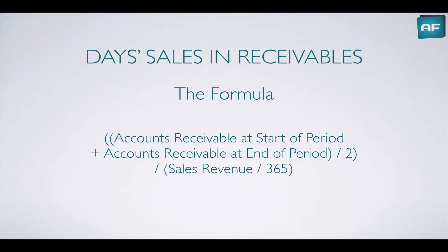The reason I've chosen to use sales revenue, and not net credit sales, is that if you wanted to use net credit sales, you would have to be internal to the company — you would have to know the credit policy, and know the proportion of credit sales versus cash sales. This more generalized formula, using sales revenue instead, allows us to be external to the company and simply use the financial statements to calculate the result.